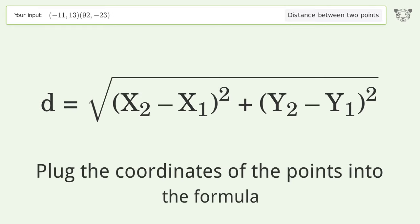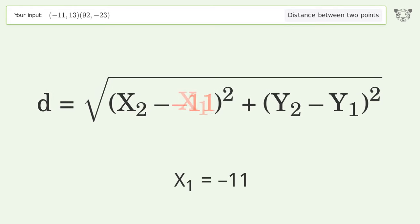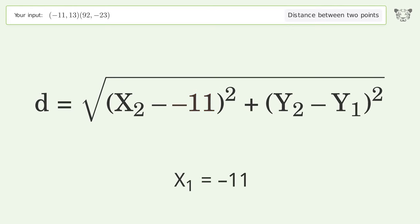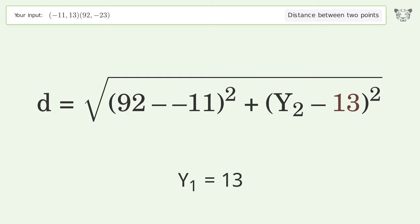Plug the coordinates of the points into the formula: x1 equals negative 11, x2 equals 92, y1 equals 13, y2 equals negative 23.